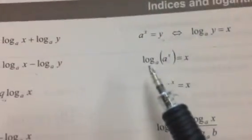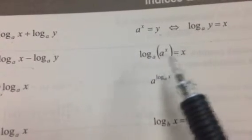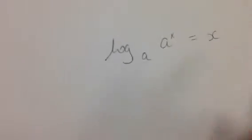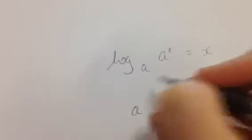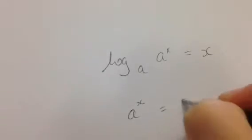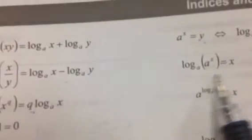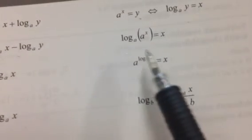Another rule: if I take this out of log format, I can see that log of a to the power of x in base a equals x. This is true because the base number a raised to what power gives a to the x — the answer is simply x. So wherever I see this pattern, I can replace it with just x.